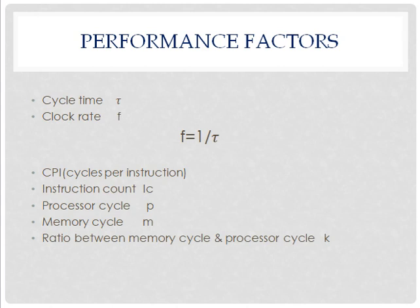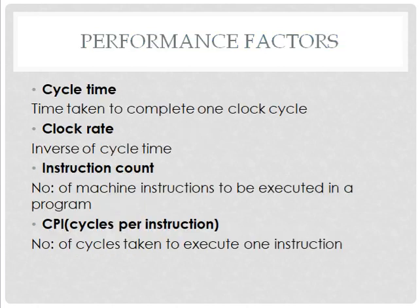Instruction count is represented as IC. Also defined are processor cycle P, memory cycle M, and the ratio between memory cycle and processor cycle, denoted as K. Let's discuss these performance factors in detail.